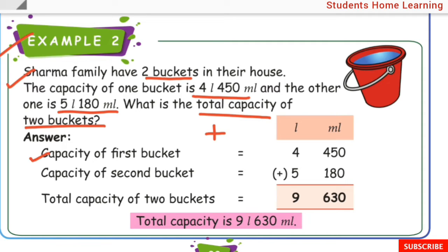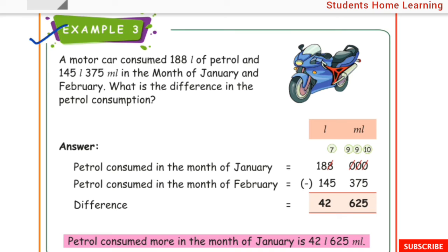Answer: Capacity of first bucket is 4 liter 450 milliliter. Capacity of second bucket is 5 liter 180 ml. Total capacity: 0 plus 0 is 0, 5 plus 8 is 13, carry 1, 1 plus 4 is 5, 5 plus 1 is 6. Liter: 4 plus 5 is 9. Total capacity is 9 liter 630 ml.